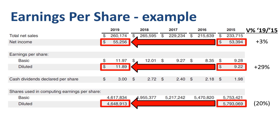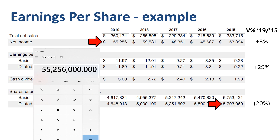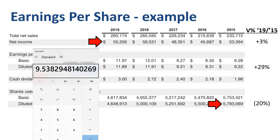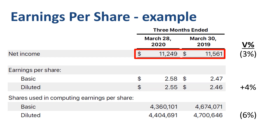Let's calculate EPS at a constant number of shares. If we divide 2019 net income of $55.3 billion by the 2015 number of shares of 5.8 billion, then the EPS would have been $9.54, instead of the actual $11.89 after the share buyback. Back to Q2 of fiscal year 2020: we looked at the change in the number of shares already — let's now look at the decrease in net income. What is driving that?